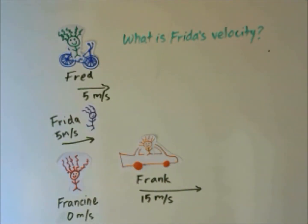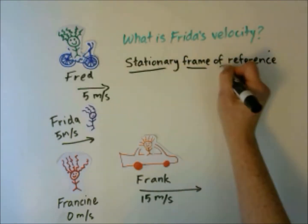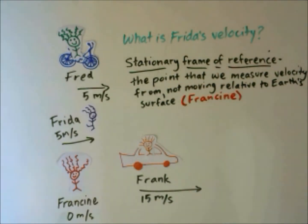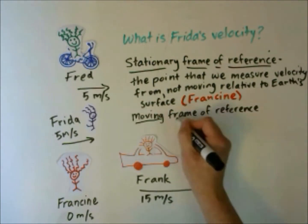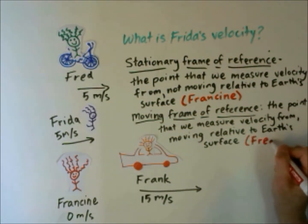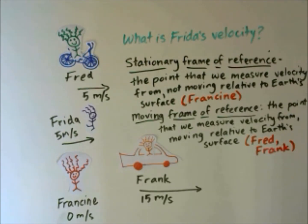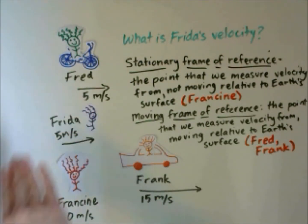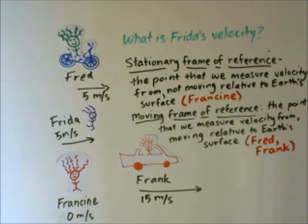So we're going to be looking at frame of reference. Sometimes we have a stationary frame of reference — that's the point that we measure velocity from which is not moving relative to the earth's surface. In this case, Francine is our stationary frame of reference. We also have a moving frame of reference — that's the point we measure velocity from that is moving relative to the earth's surface. Frank is moving; he's a moving frame of reference to measure Frida's velocity. Fred is also moving; he's a moving frame of reference that we use to measure Frida's velocity.